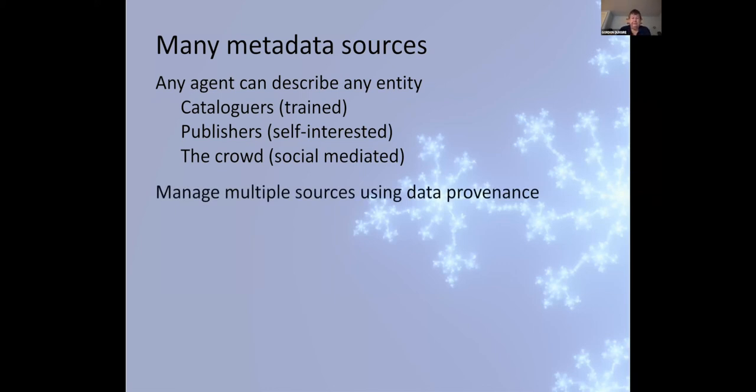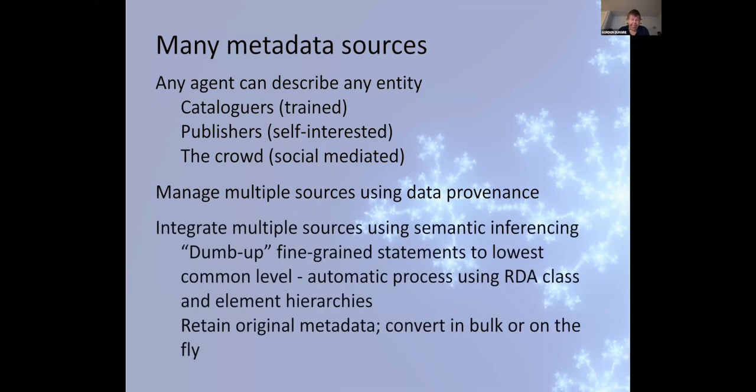We can manage these multiple sources using data provenance. This is increasingly an urgent problem. The different sources have different characteristics of their metadata in terms of quality, in terms of focus, in terms of completeness. And it's important to know who said what and why. We can further integrate multiple sources using semantic inferencing, another phenomenon of the fifth information age. We can dumb up, that is, broaden, fine-grained statements to a lowest common level. We can take metadata that only talks about creators, and we can interoperate it with metadata that uses more precise roles, such as editors, translators, etc., the kind of roles I showed in the first slide.